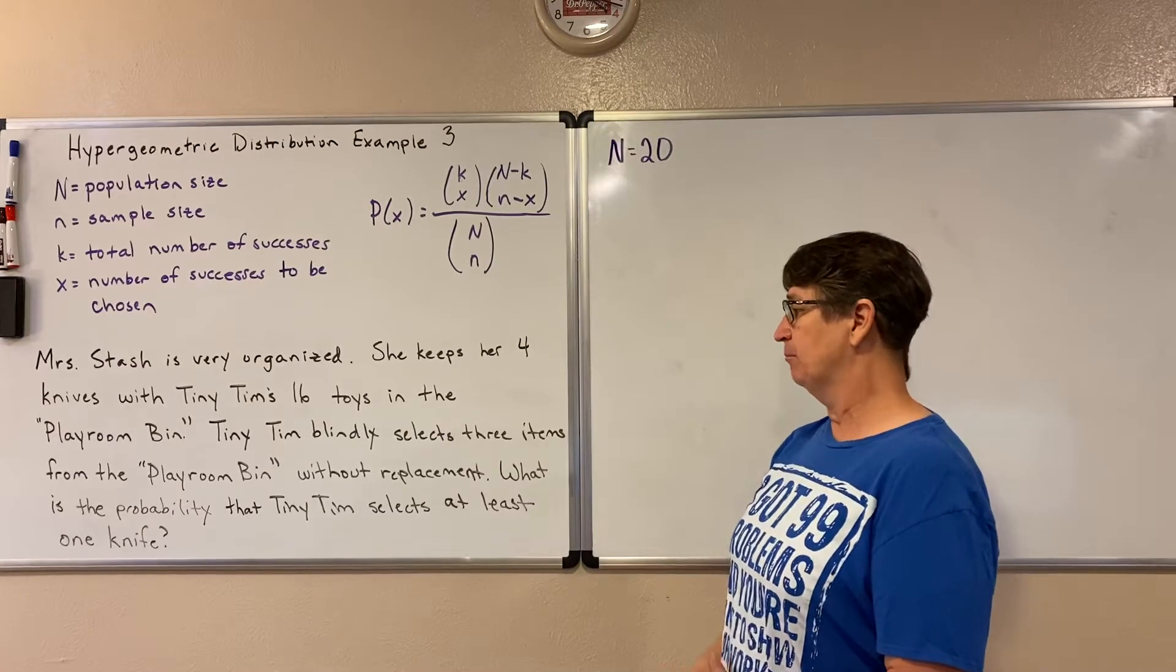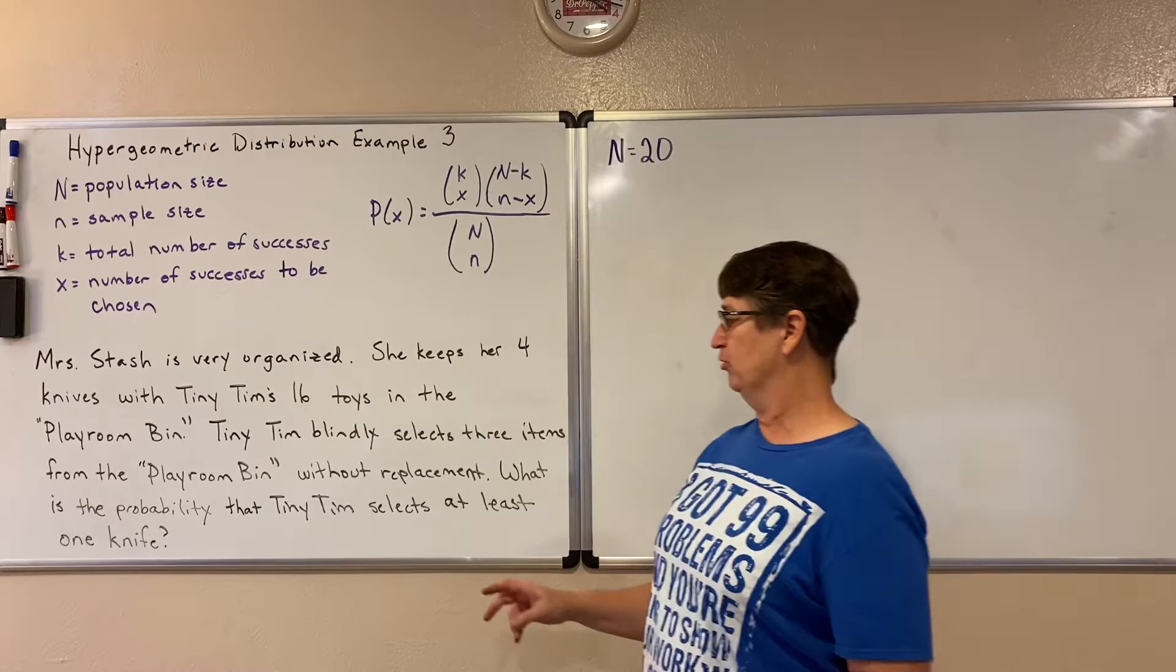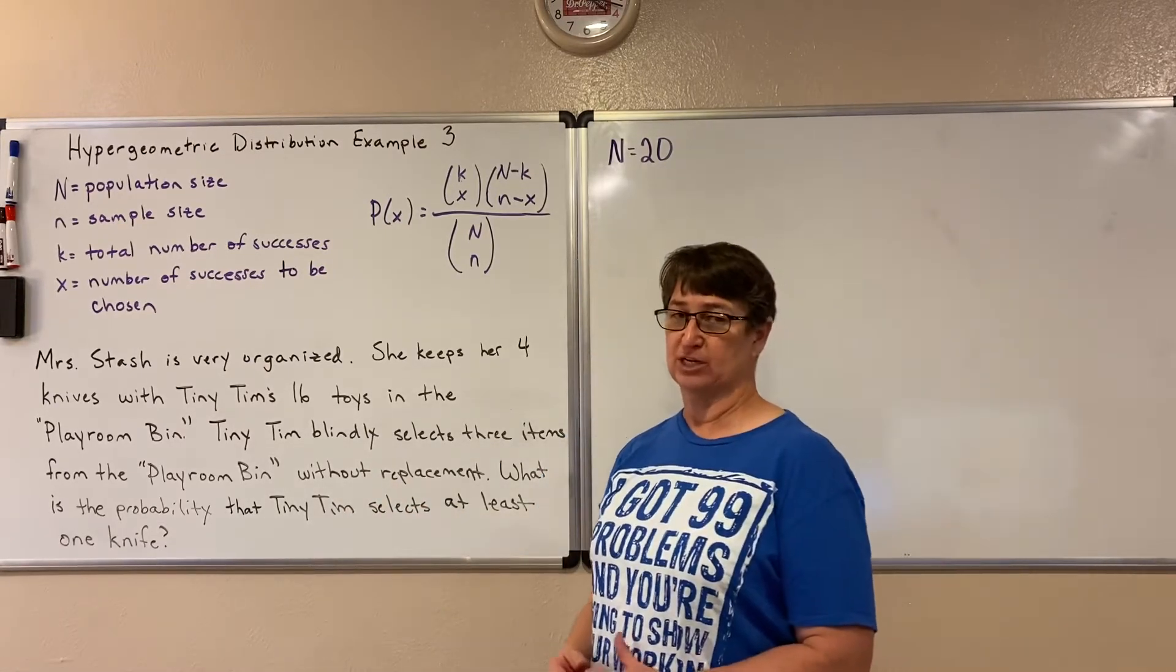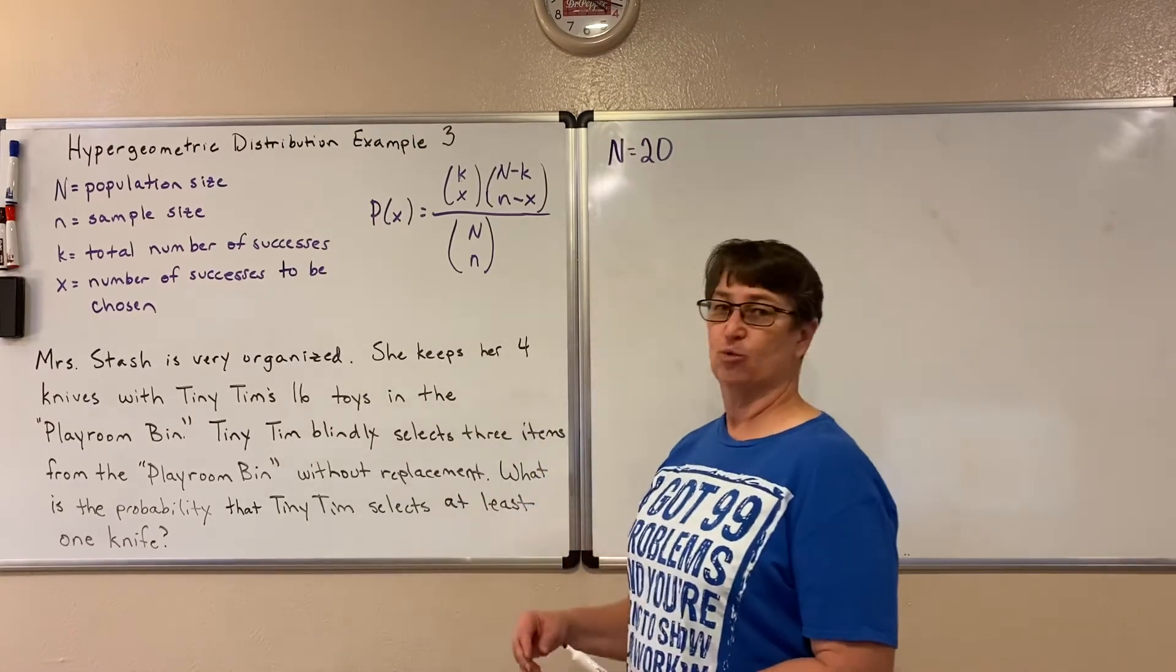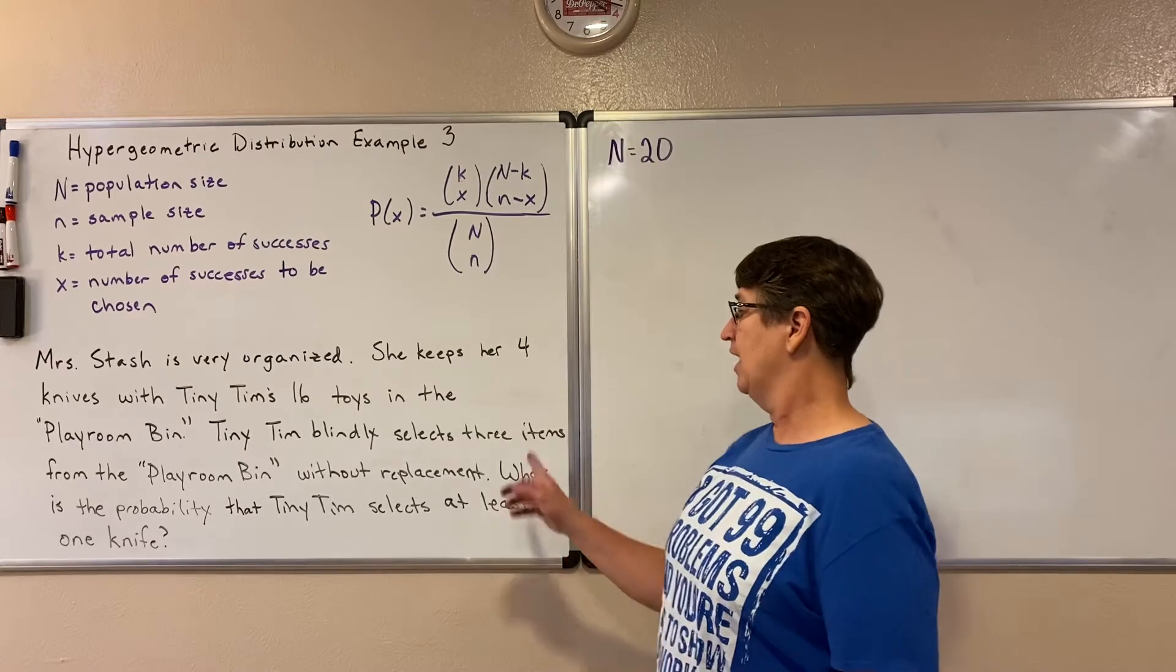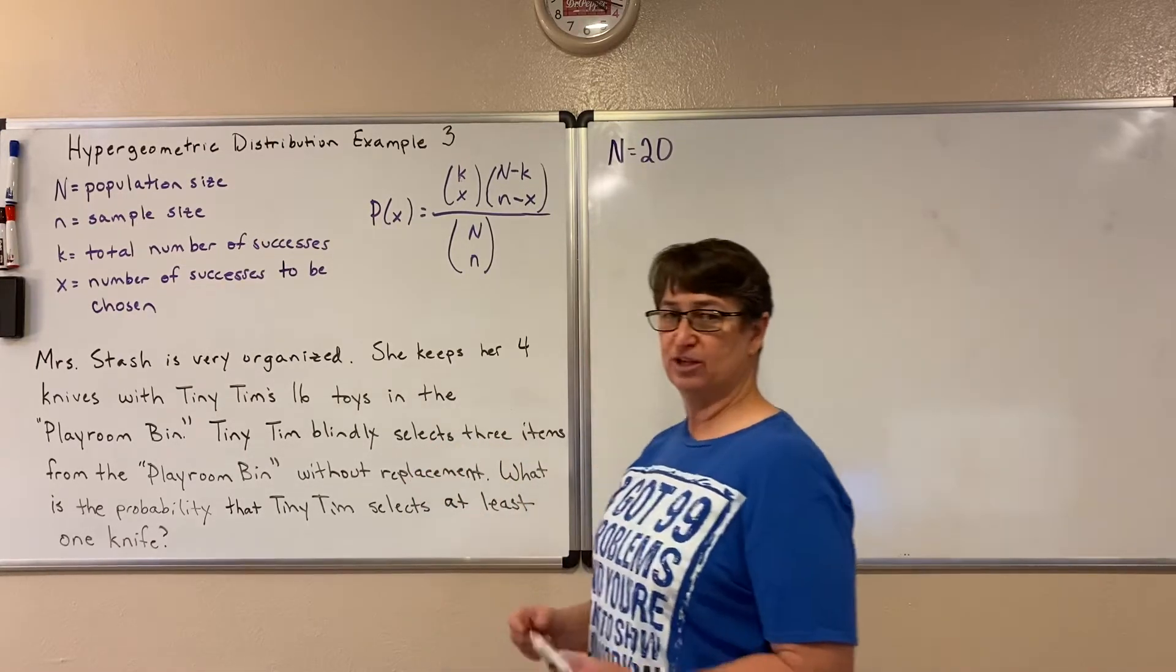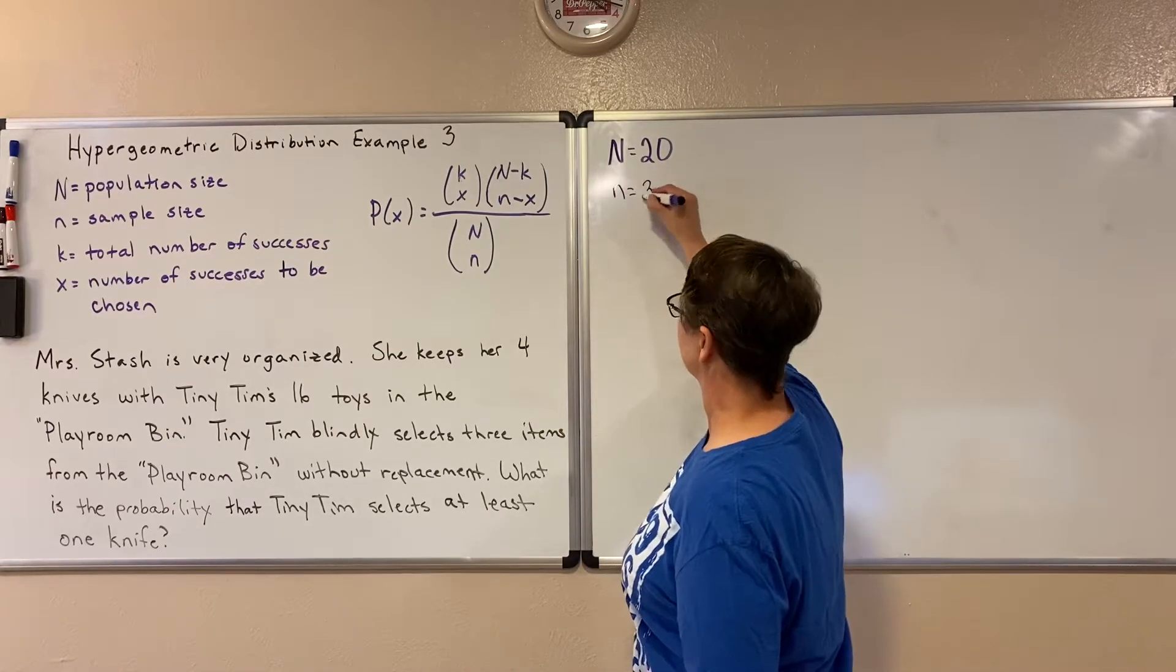Tiny Tim blindly selects three items from the playroom bin without replacement. That without replacement is what makes that hypergeometric, hypergeometric rather than binomial. The fact that we are not replacing. And here he is selecting three items. So his sample is three items. So our sample size is three.